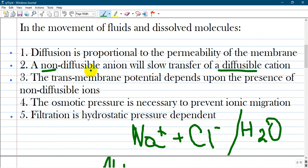Let's go through every option and see which one is true or false. Diffusion is proportional to the permeability of the membrane.